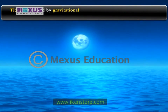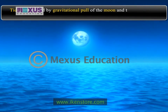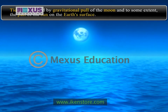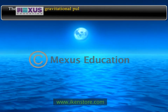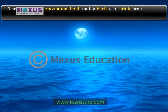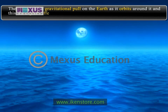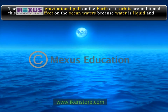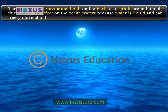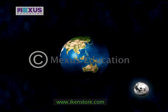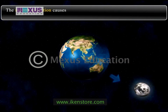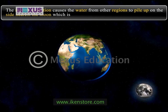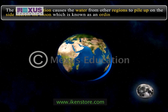Tides are caused by the gravitational pull of the moon and to some extent the pull of the sun on the earth's surface. The moon exerts gravitational pull on the earth as it orbits around it, and this has a great effect on the ocean waters because water is liquid and can freely move about. The moon's attraction causes the water from other regions to pile up on the side nearest the moon, which is known as an ordinary high tide.